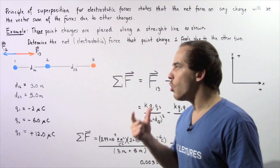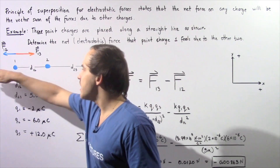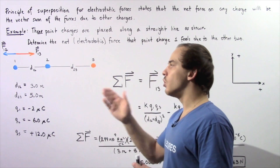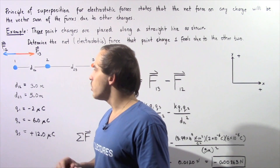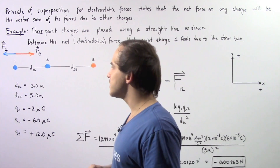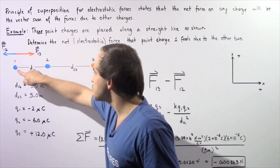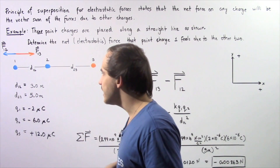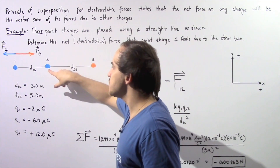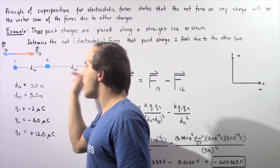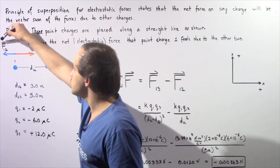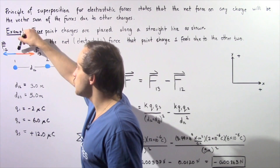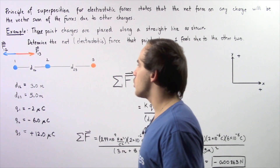We'll determine all forces acting on point charge 1 along the horizontal x-axis. We choose the rightward direction as positive and the leftward direction as negative. Because point charges 1 and 2 have the same sign, they repel, so point charge 2 creates a force on point charge 1 pointing in the negative x-direction. This force is labeled F12 — the force on point charge 1 due to point charge 2.